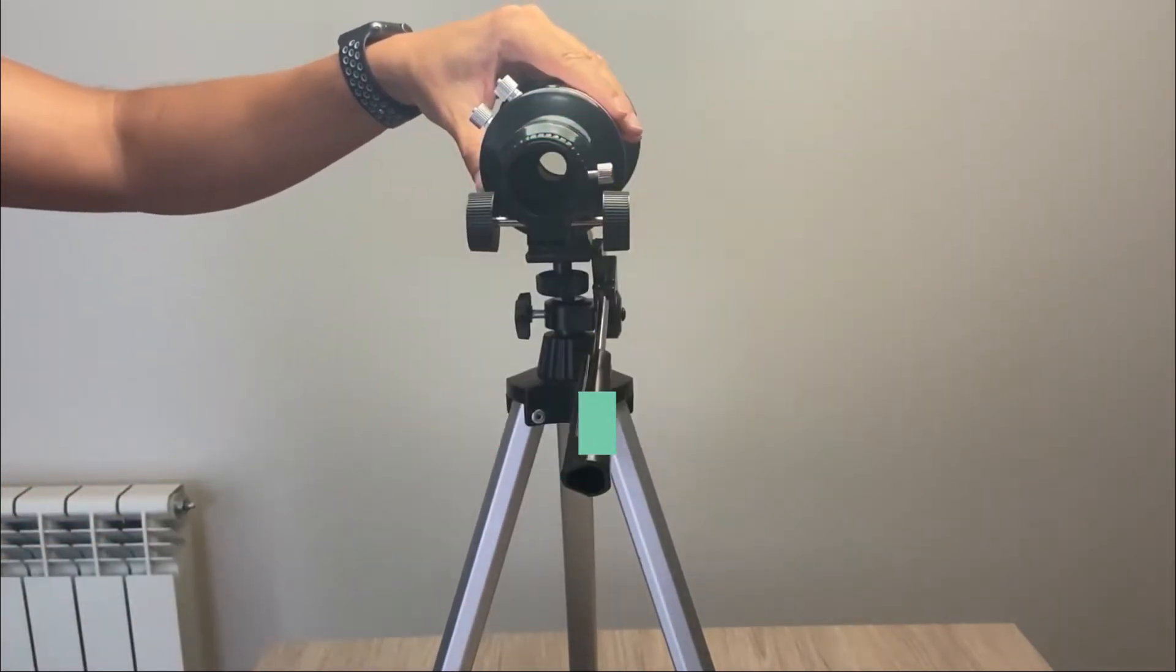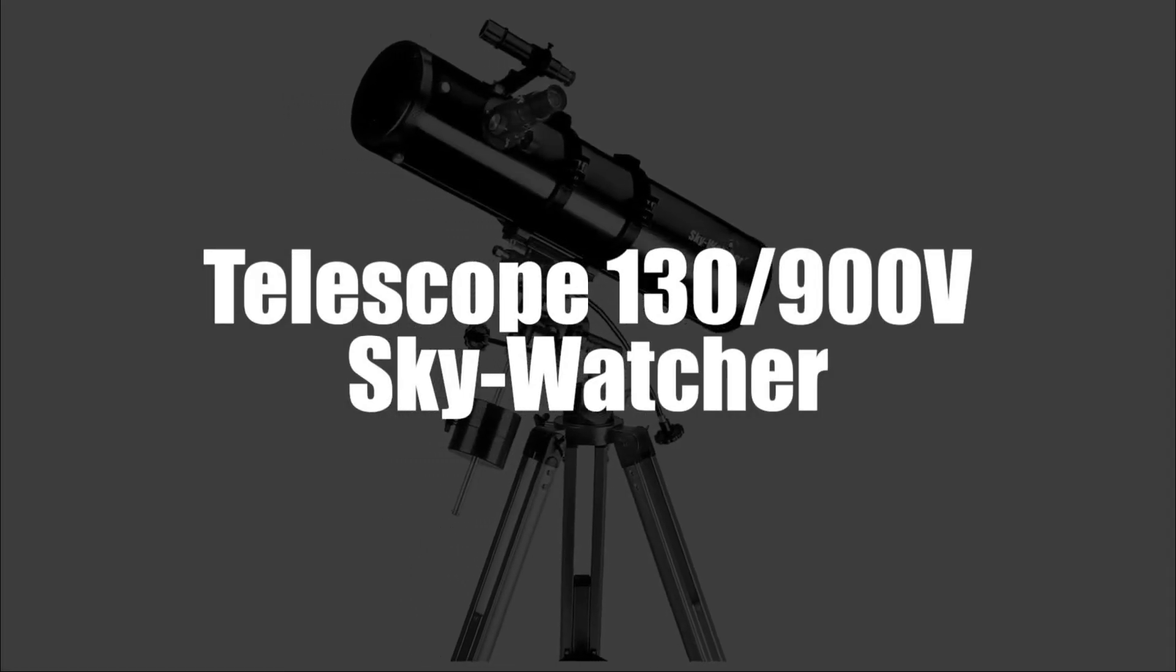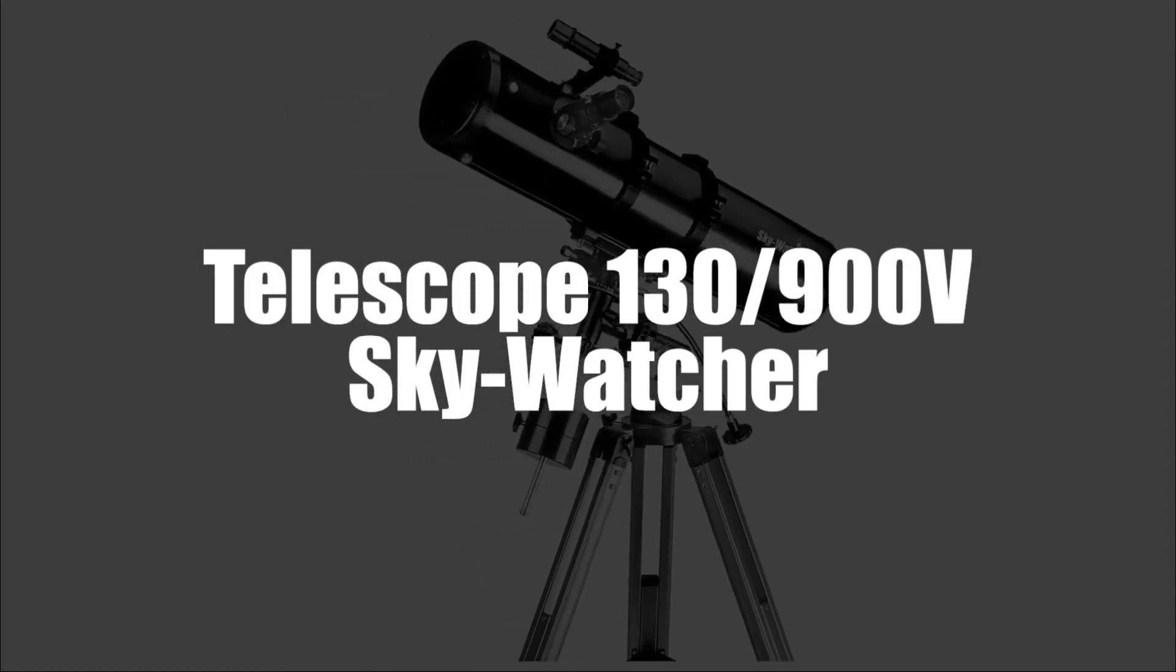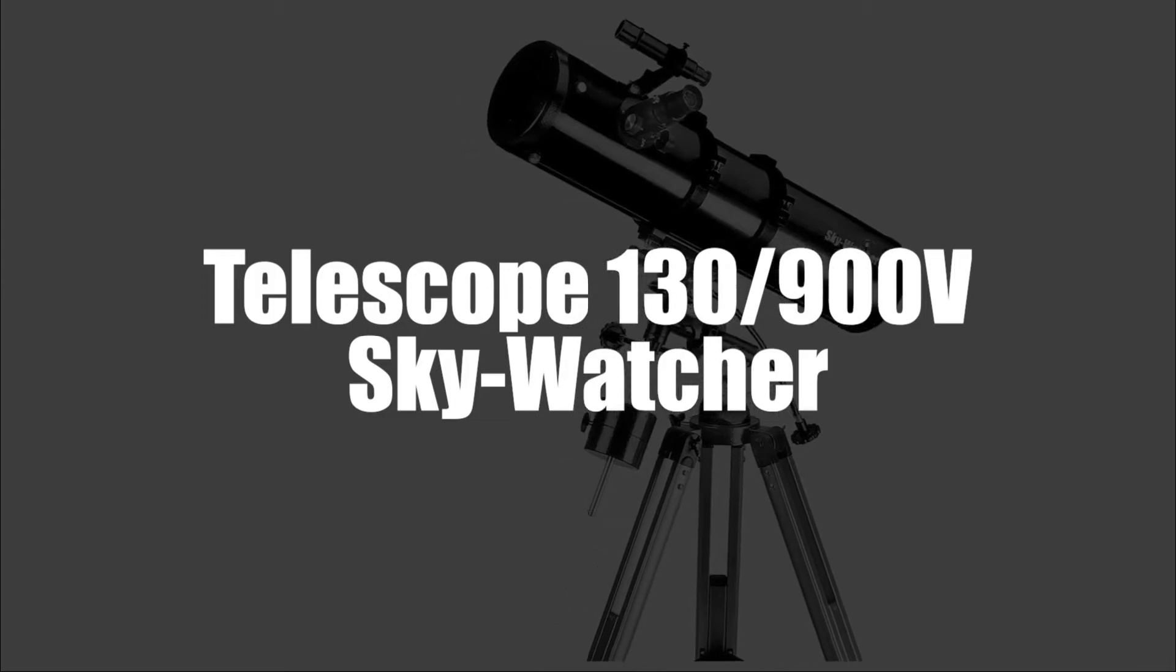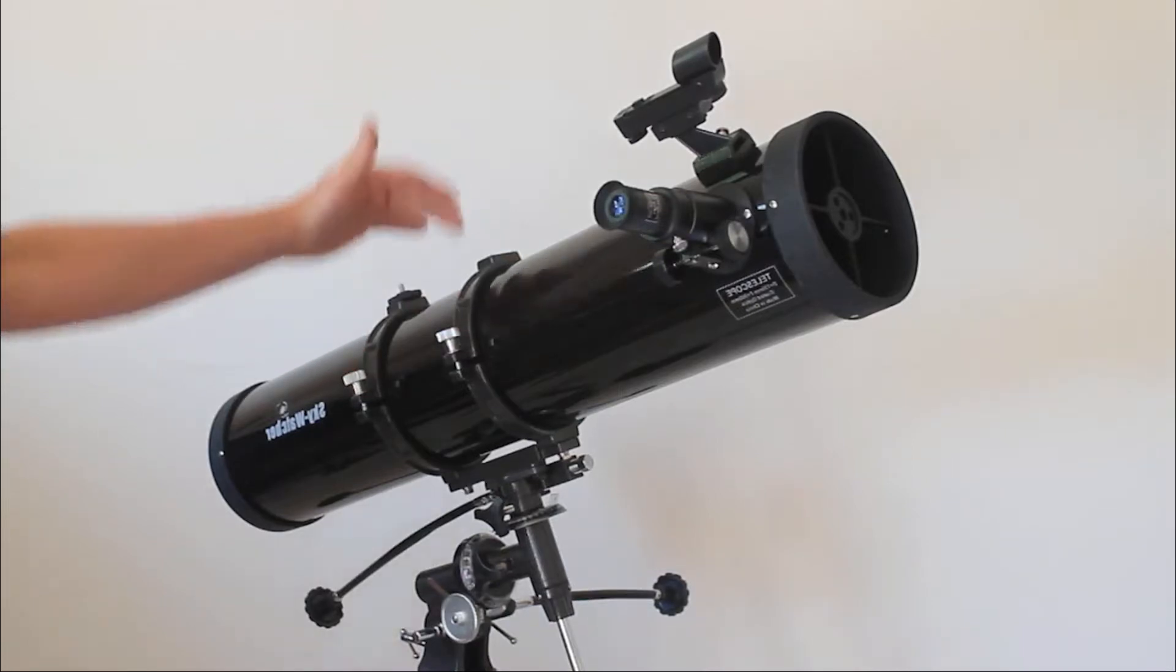Starting our list off in fourth place, we have selected the Skywatcher 130-900 Telescope on Equatorial EQ2. This telescope by Skywatcher has a parabolic mirror of 130 millimeters in diameter. In other words, you can see what's out there in space.